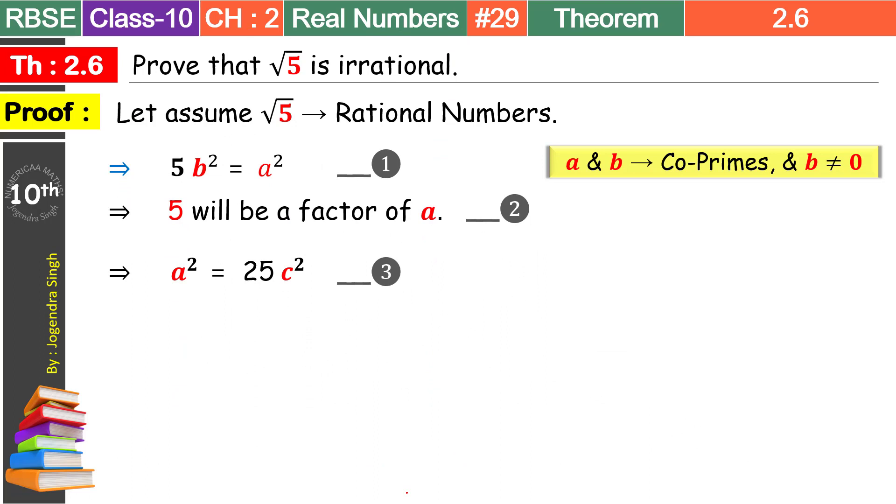Ab humare paas equation 1 hai aur equation 3 hai. Dono mein ek side humari hai a square. So because dono equation a square ke equal koi number dete hain, koi value dete hain, toh hum keh sakte hain. Accordingly by equation 1 and 3 we can say that 5b square is equal to 25c square. Left mein 5 hai, right mein 25 hai. Puri equation ko 5 se divide karo. Toh humara left wala 5 cancel out ho jata hai. Aur right mein hum kya milta hai. 5 ek aur 5 ja. Toh humare ko b square is equal to 5c square mil jata hai. So we can write this as b square is equal to 5c square.